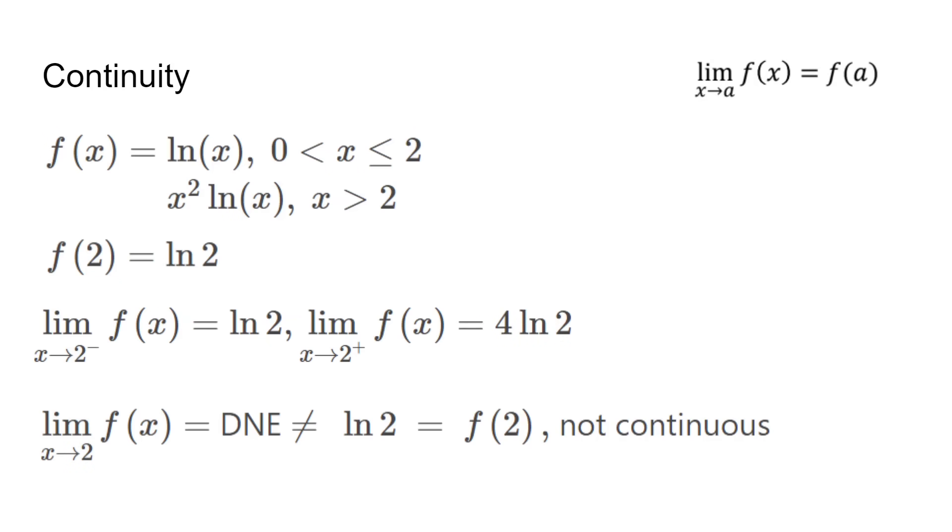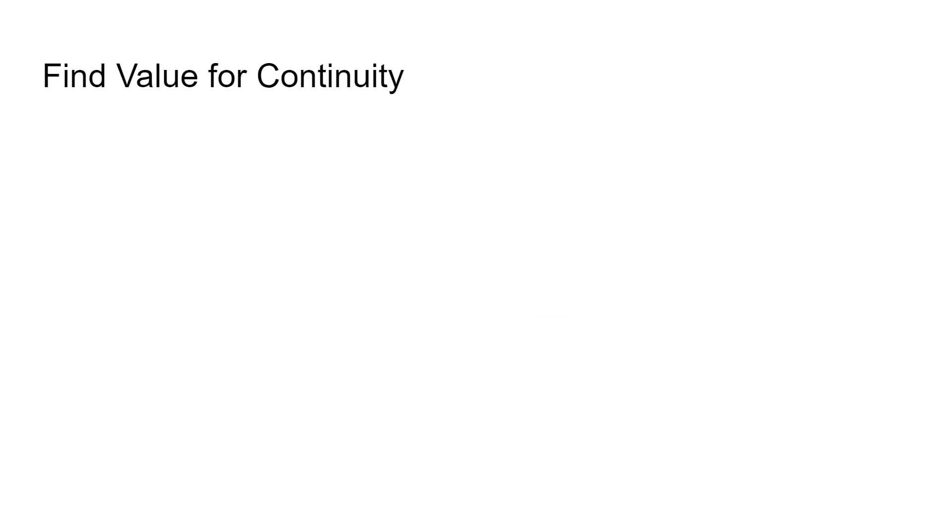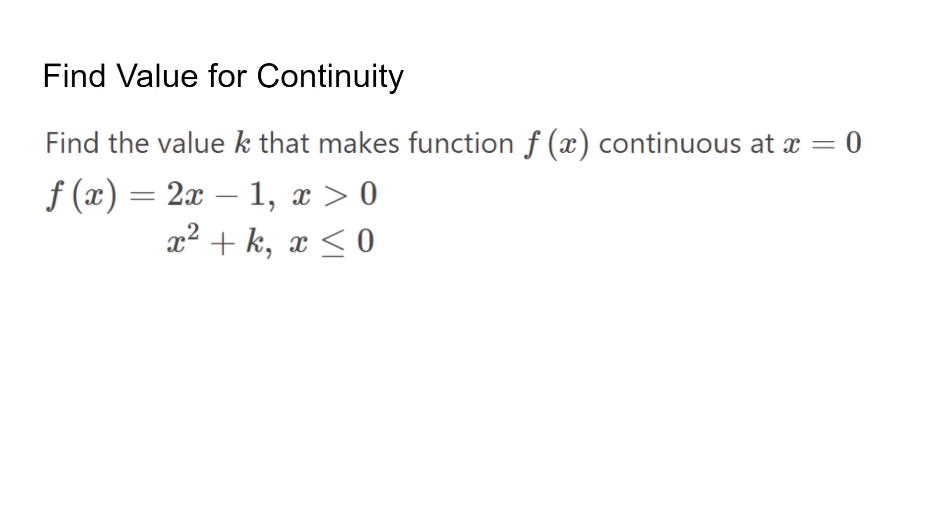Another common question is finding a value to make a piecewise function continuous. In this example, we know that continuity requires limits from both sides to be equal. We set them equal to each other, plug our values in, and our answer is k equals negative 1.